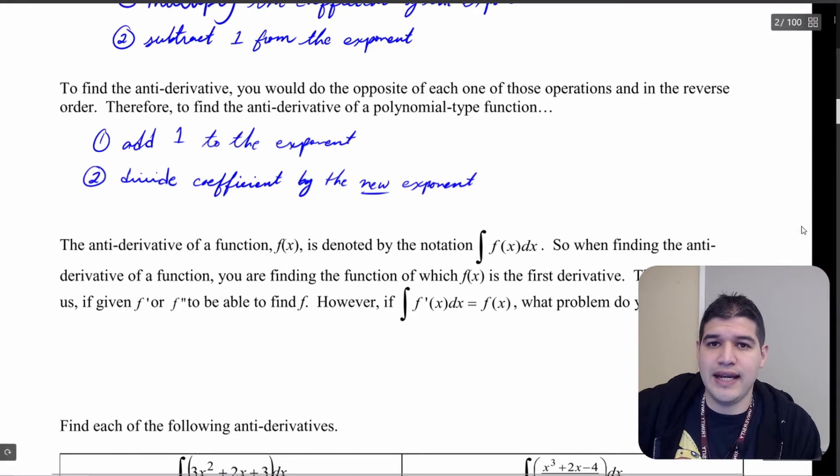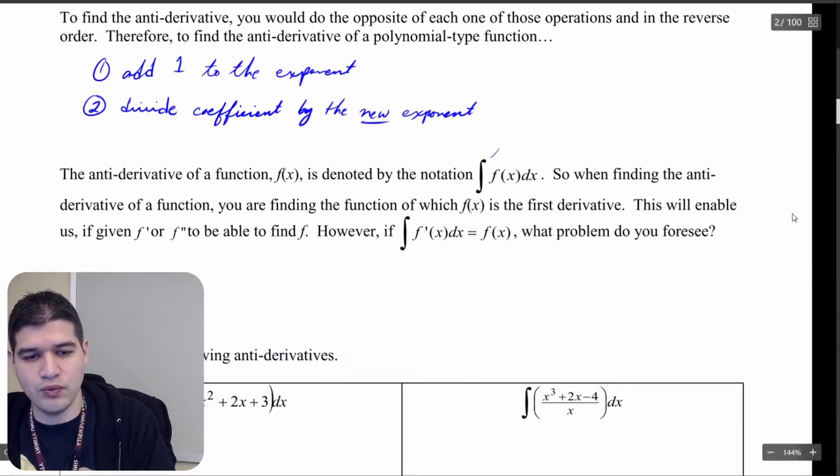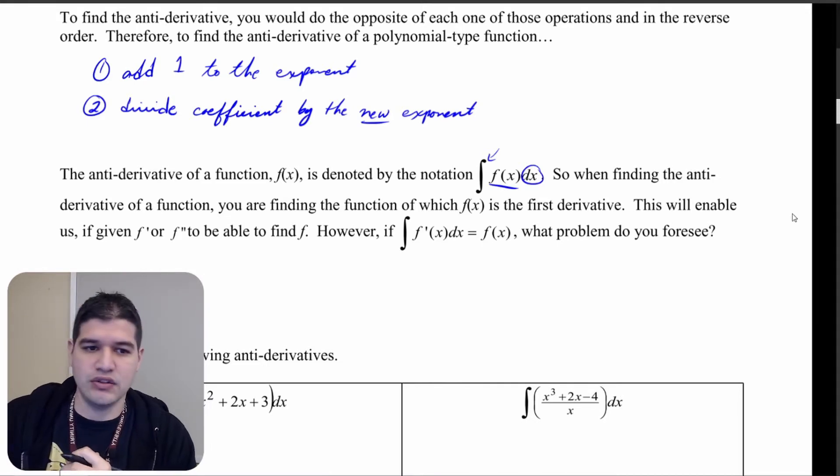When we're finding these antiderivatives we're going to be introducing some new notation. Right here we have the integral, this is the integrand, and then dx is the variable of integration.